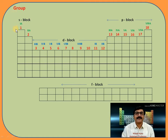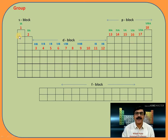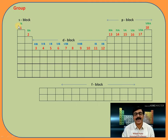There are two ways to write the group number: the oldest method and the newest method. In the newest method, we use numbers from one to eighteen. In the oldest method, these groups are classified into two types: A subgroup and B subgroup. A subgroup is present in S block and P block, and B subgroup is present in D block and F block.